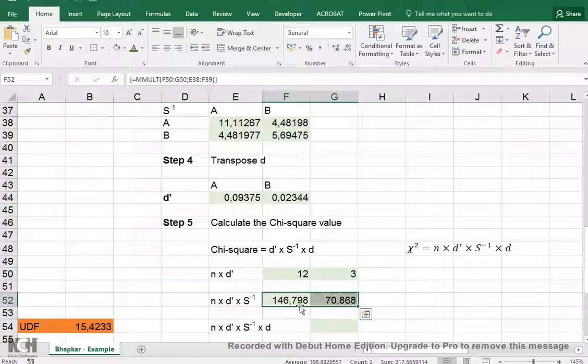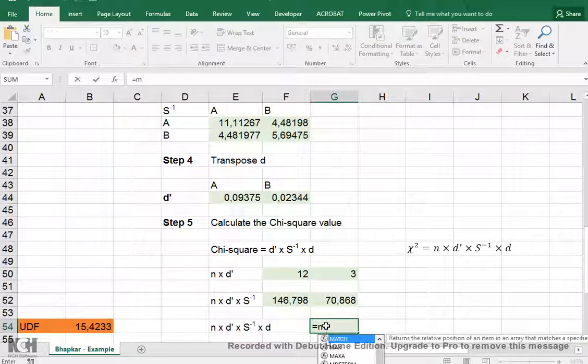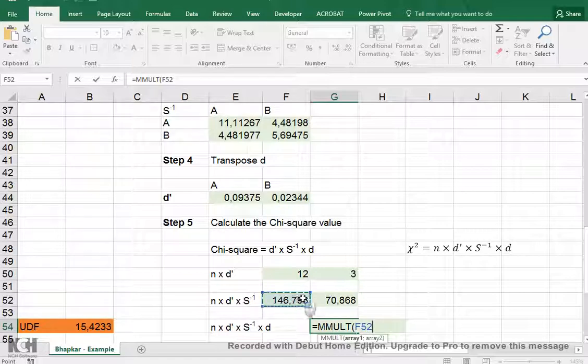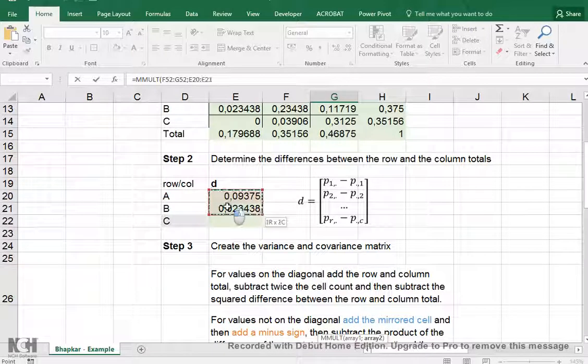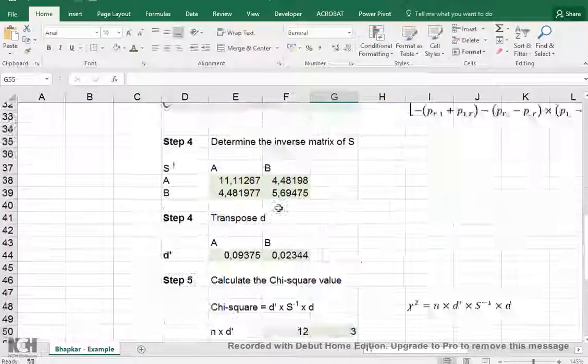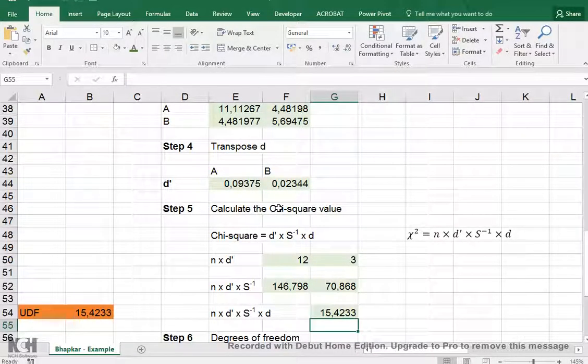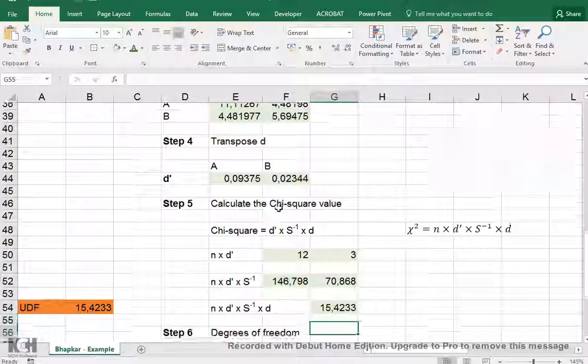And last but not least, this now needs to be multiplied with the original differences. So equals MMULT again, and we select these two that we're left with, and they need to be multiplied with the original d, which was only these two, and we can simply hit Enter now because it's no longer an array. And finally, we have our chi-square value.